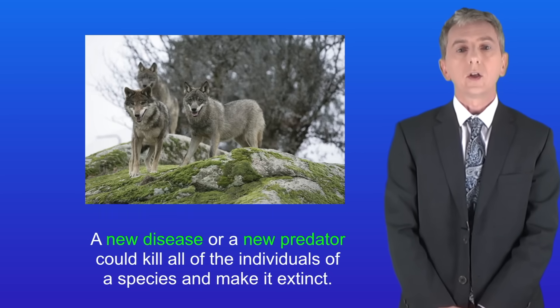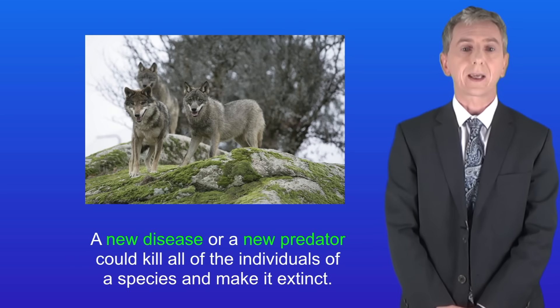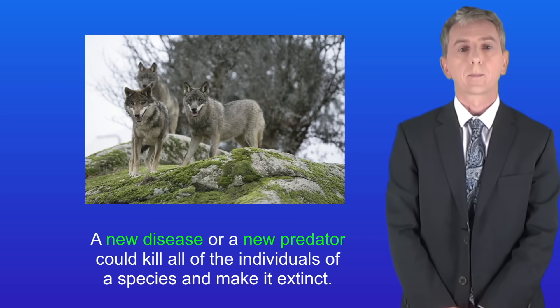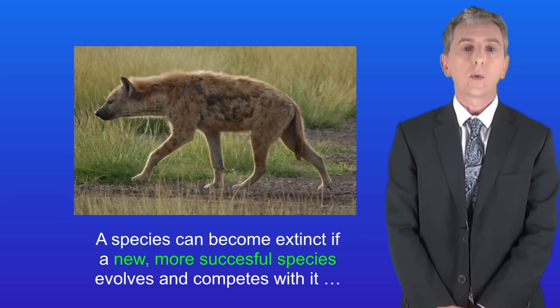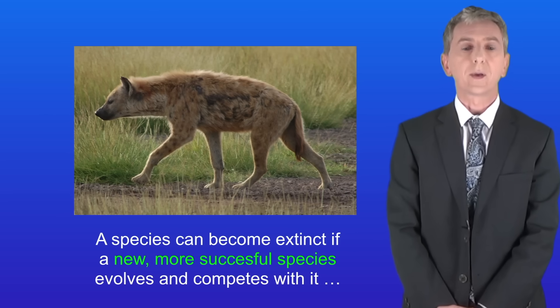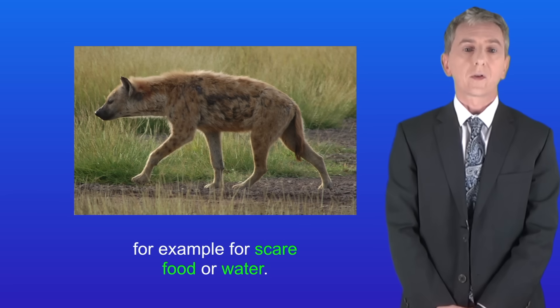A new disease or a new predator could kill all of the individuals of a species and make it extinct. And finally, a species can become extinct if a new more successful species evolves and competes with it — for example for scarce food or water.